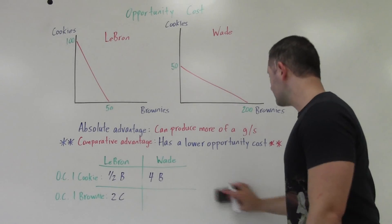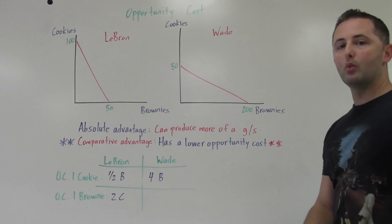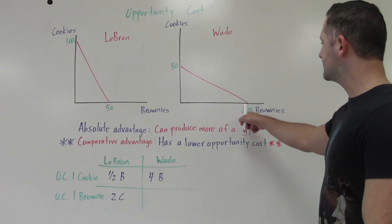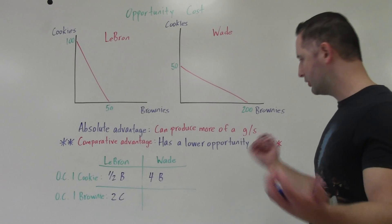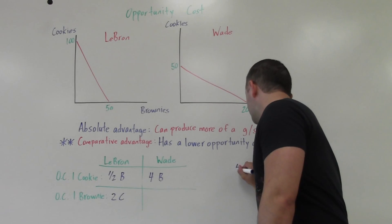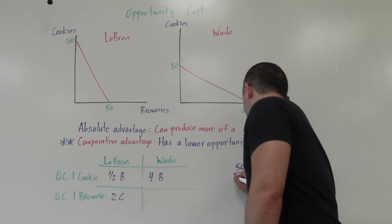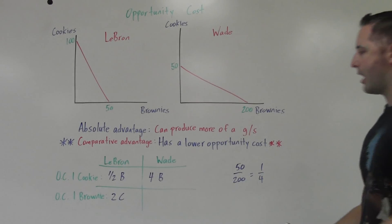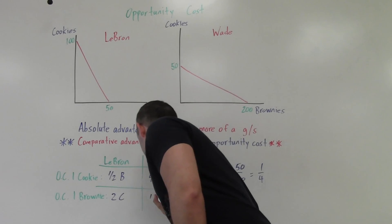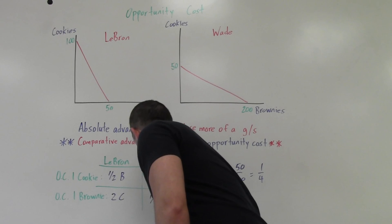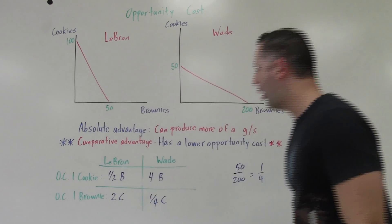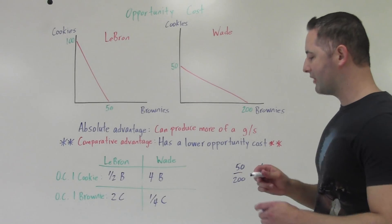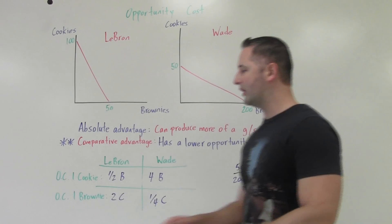Last one: Wade's opportunity cost of making one additional brownie. We divide by 200 since he can make 200 brownies. For the cookies side: 50 divided by 200 equals one fourth. So Wade is giving up one fourth of a cookie to make one brownie. You'll notice these numbers are all reciprocals of each other — that will always be true.